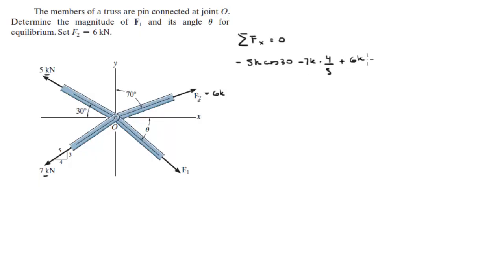You know that the x component of this force is positive 6k sine of 70, and you know that the x component of this force is positive F1 cosine of theta, and all that is equal to zero.